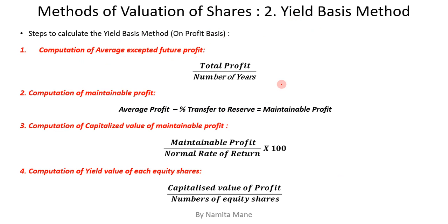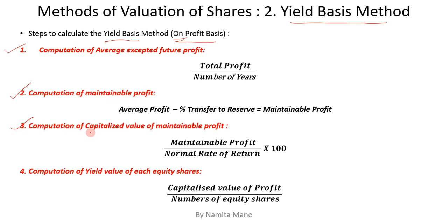Next method is yield basis method. Yield basis method is calculated on two bases: first on profit basis and second on dividend basis. Usually in examination, yield basis method is calculated on profit basis. On profit basis, yield basis is calculated in four steps: first is computation of average accepted future profit, second is computation of maintainable profit, third is computation of capitalized value of maintainable profit, fourth is computation of yield value of each equity share.